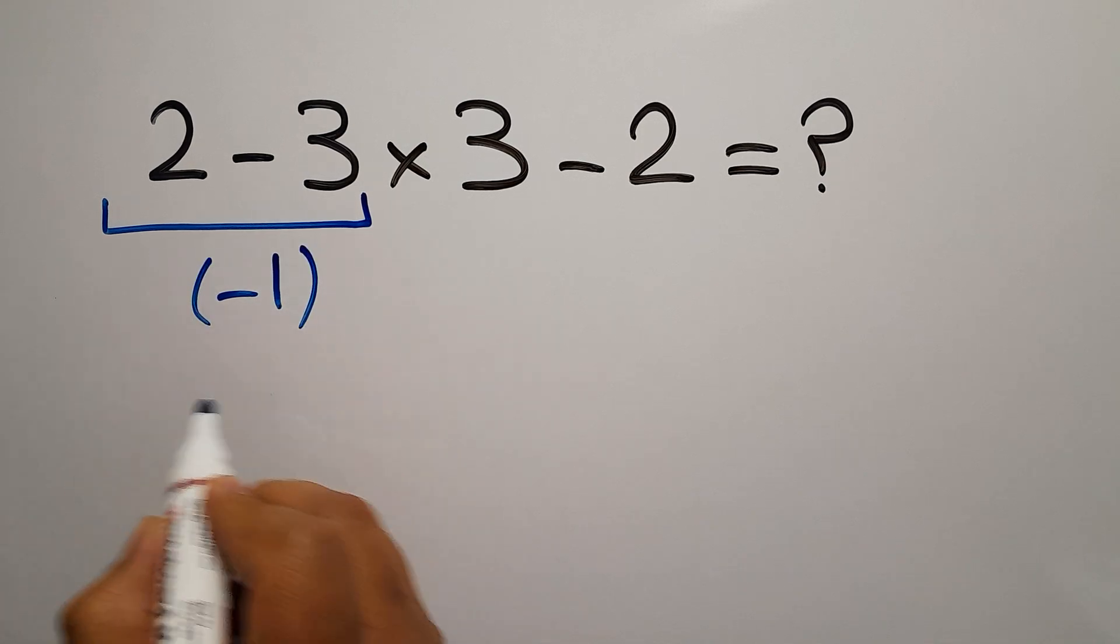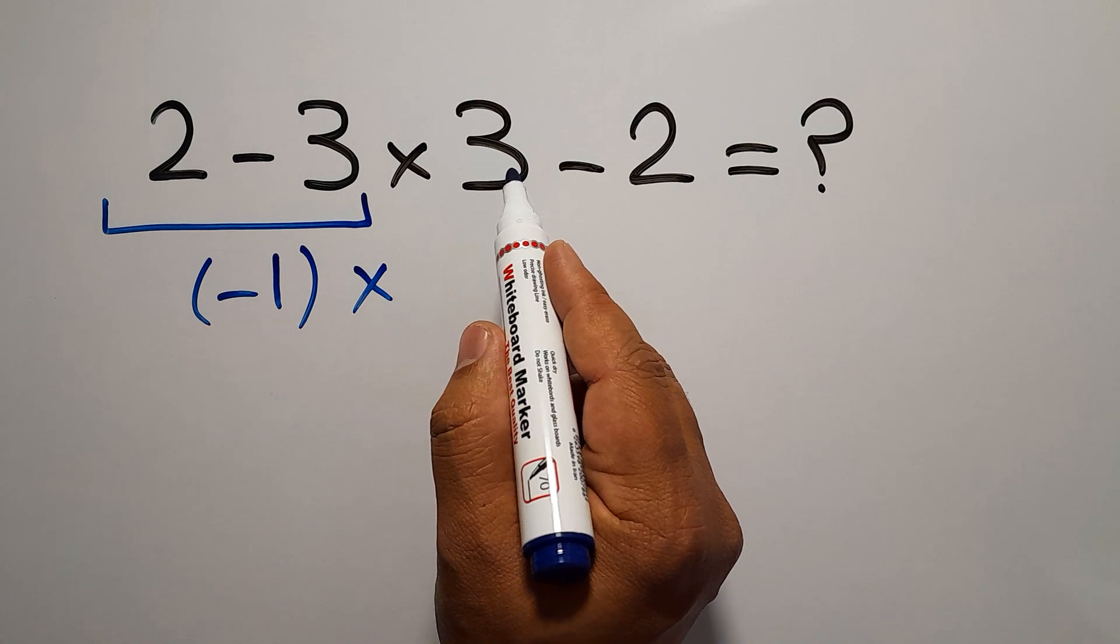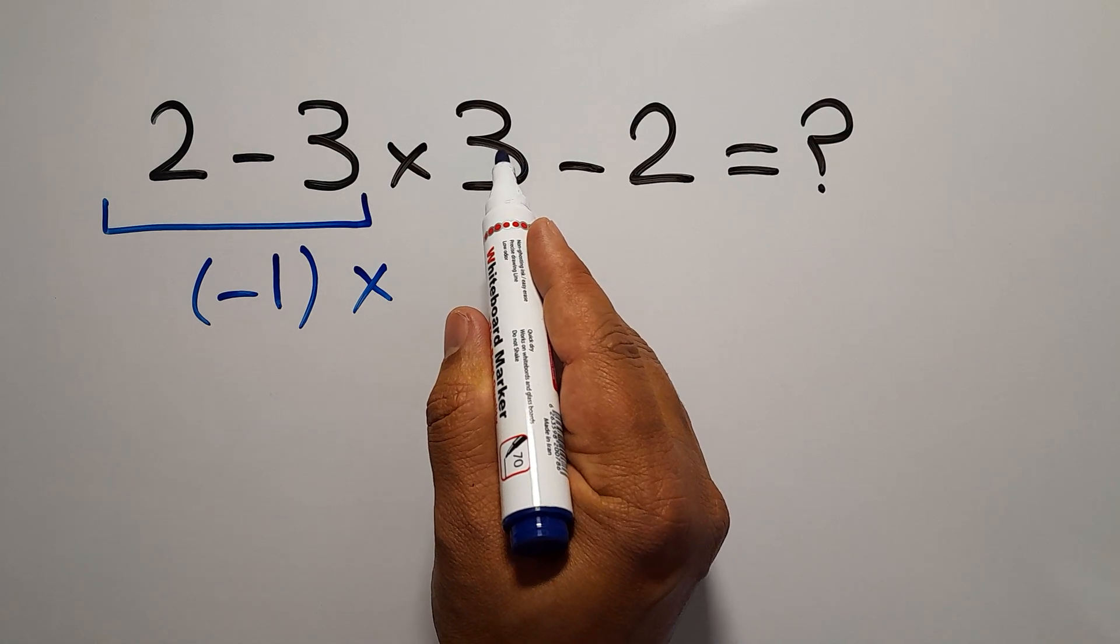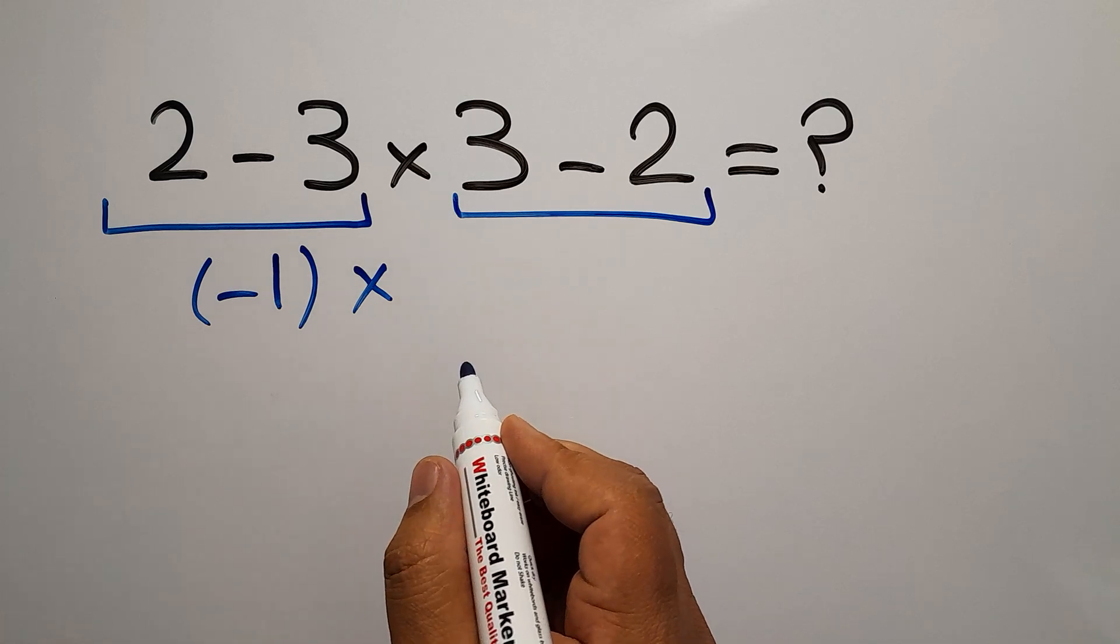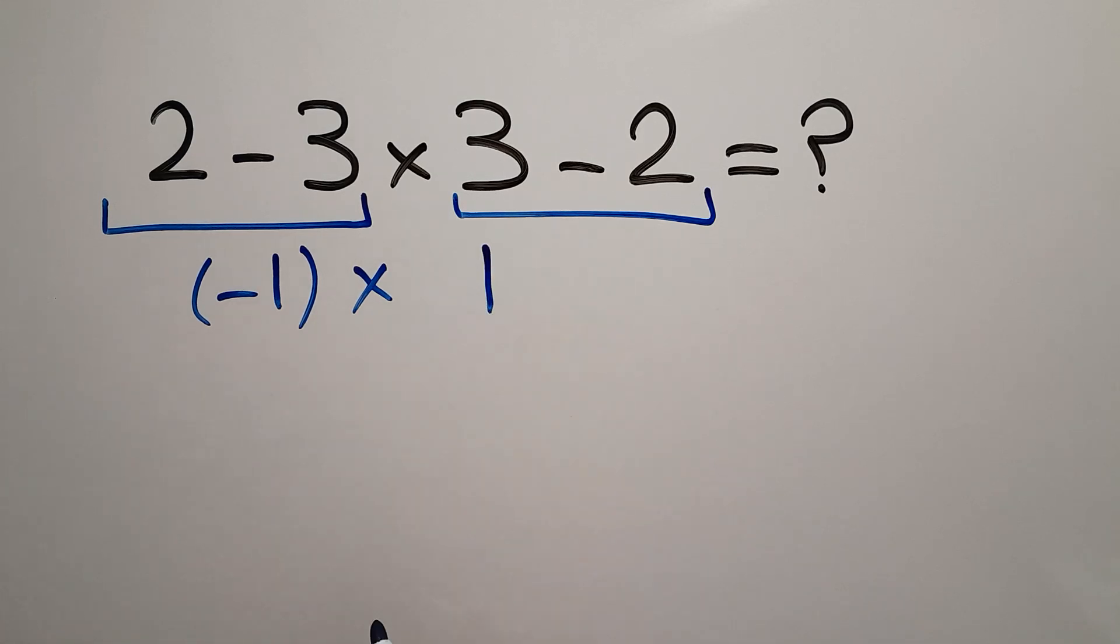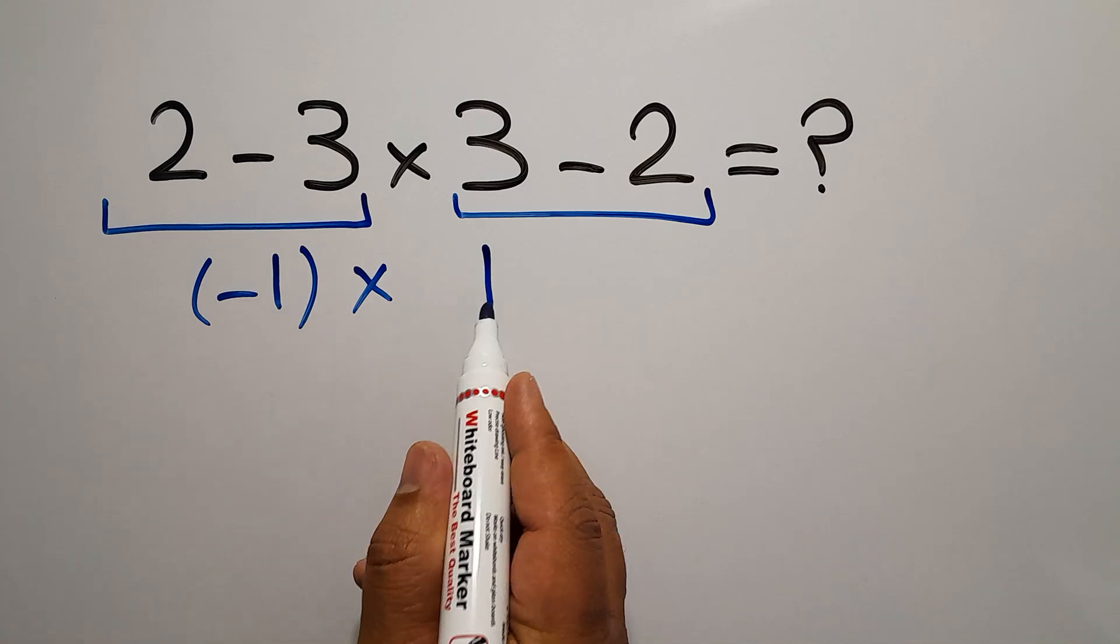So, negative 1 times, again, we have here 3 minus 2. 3 minus 2 equals 1. So, negative 1 times 1,